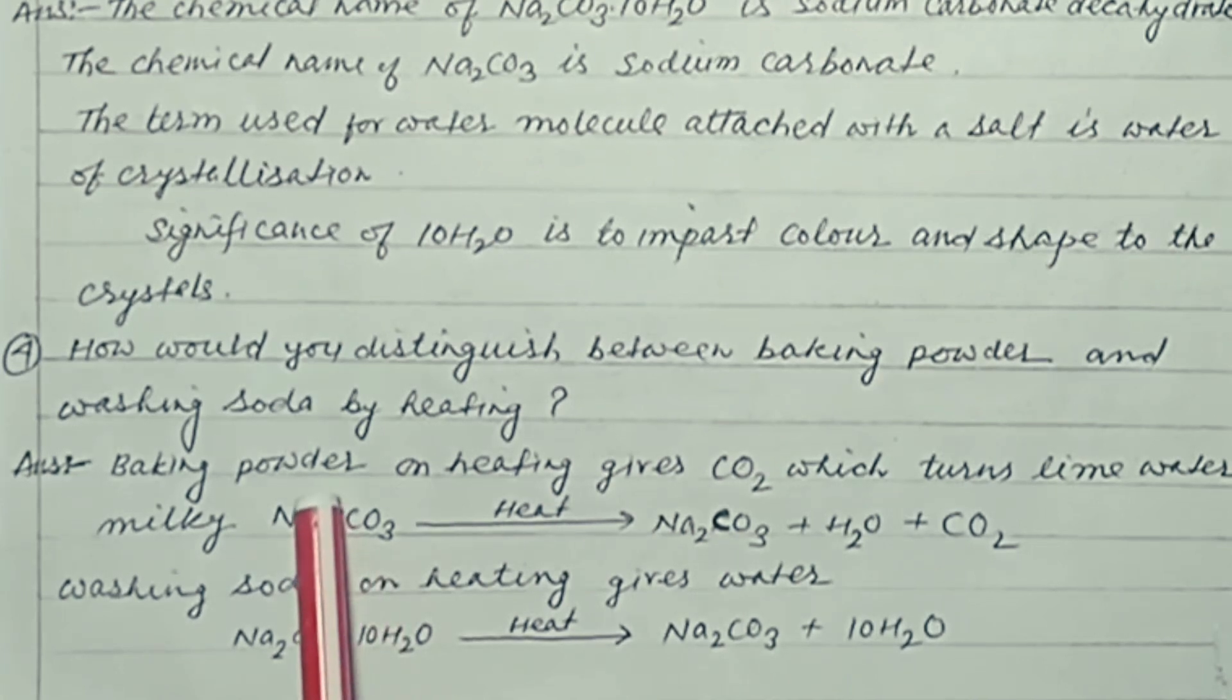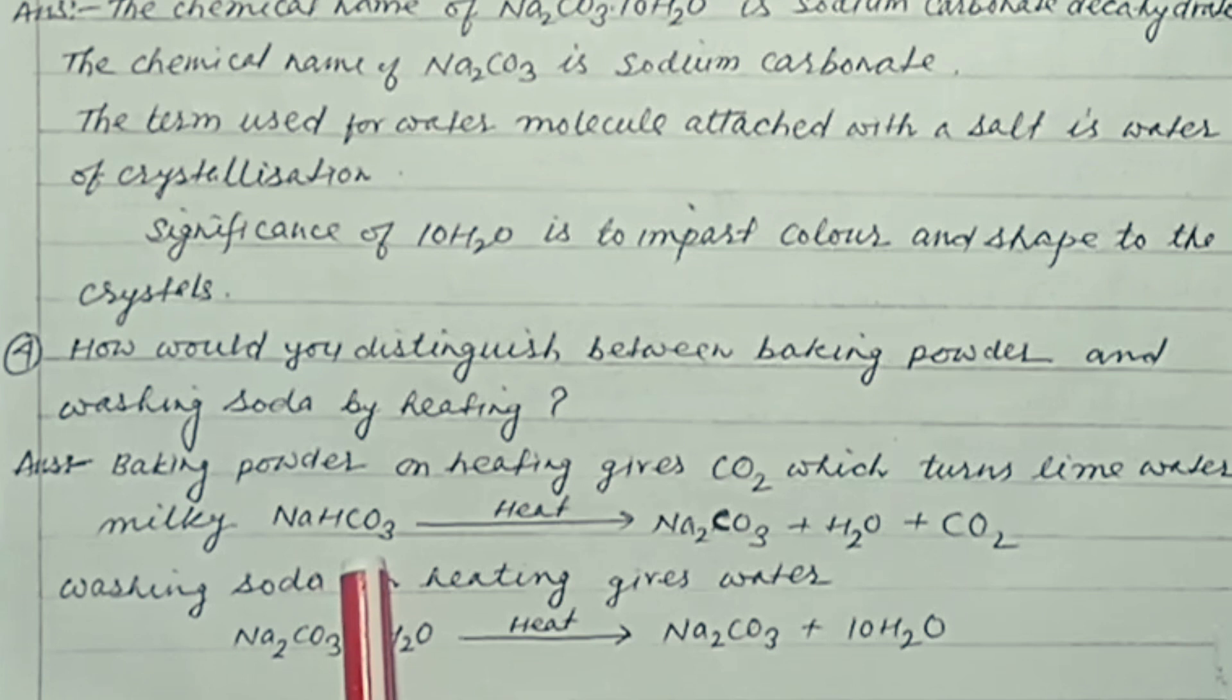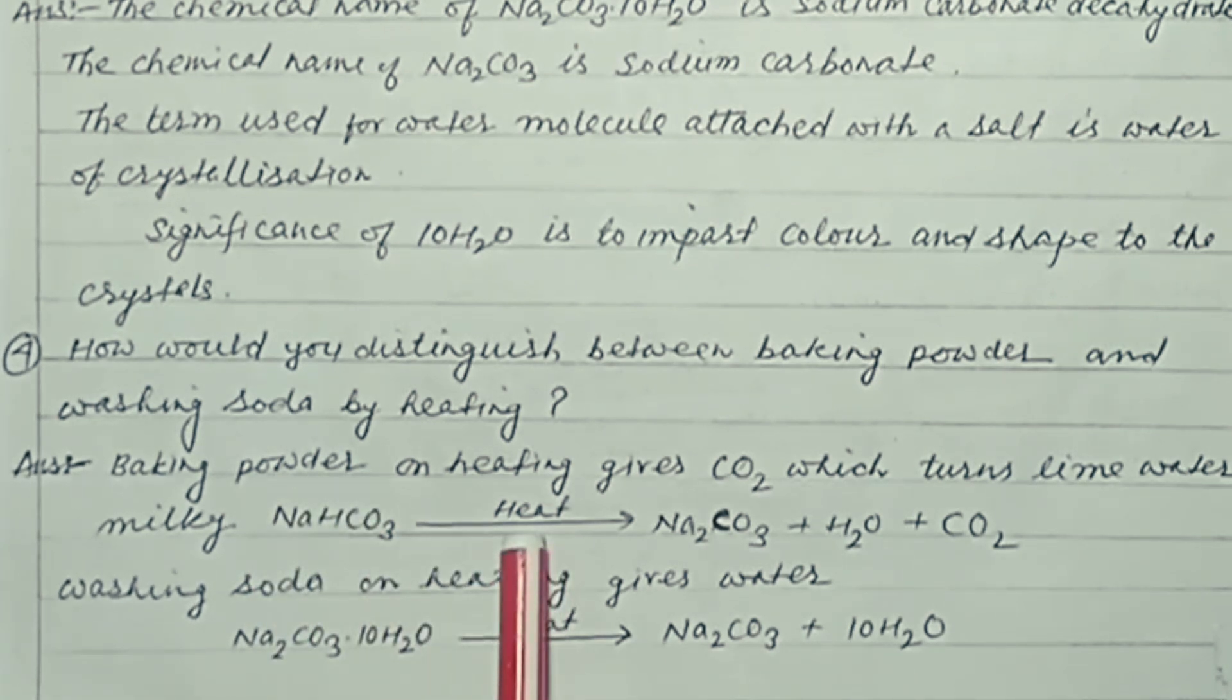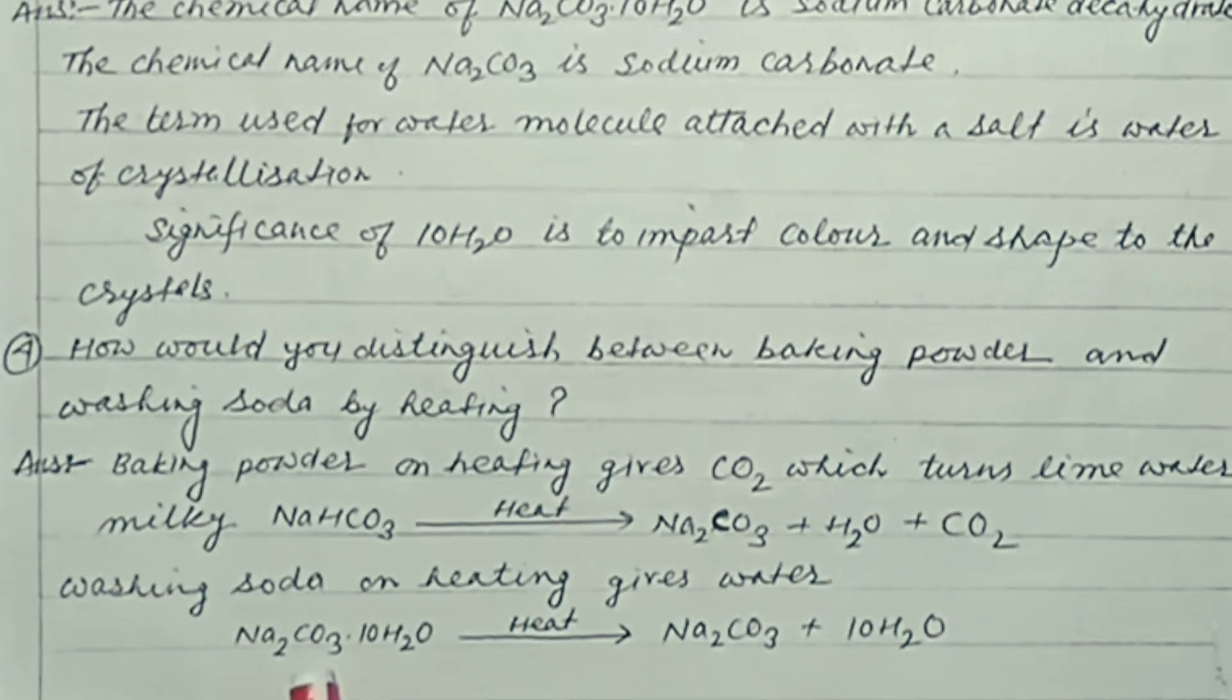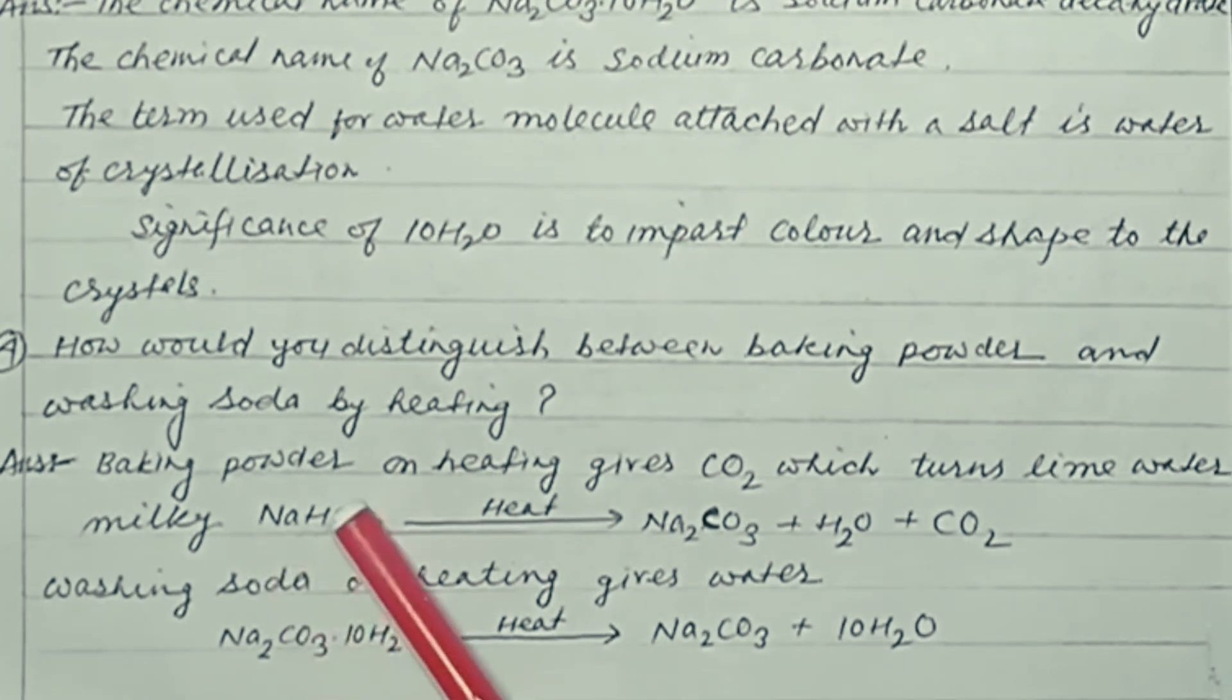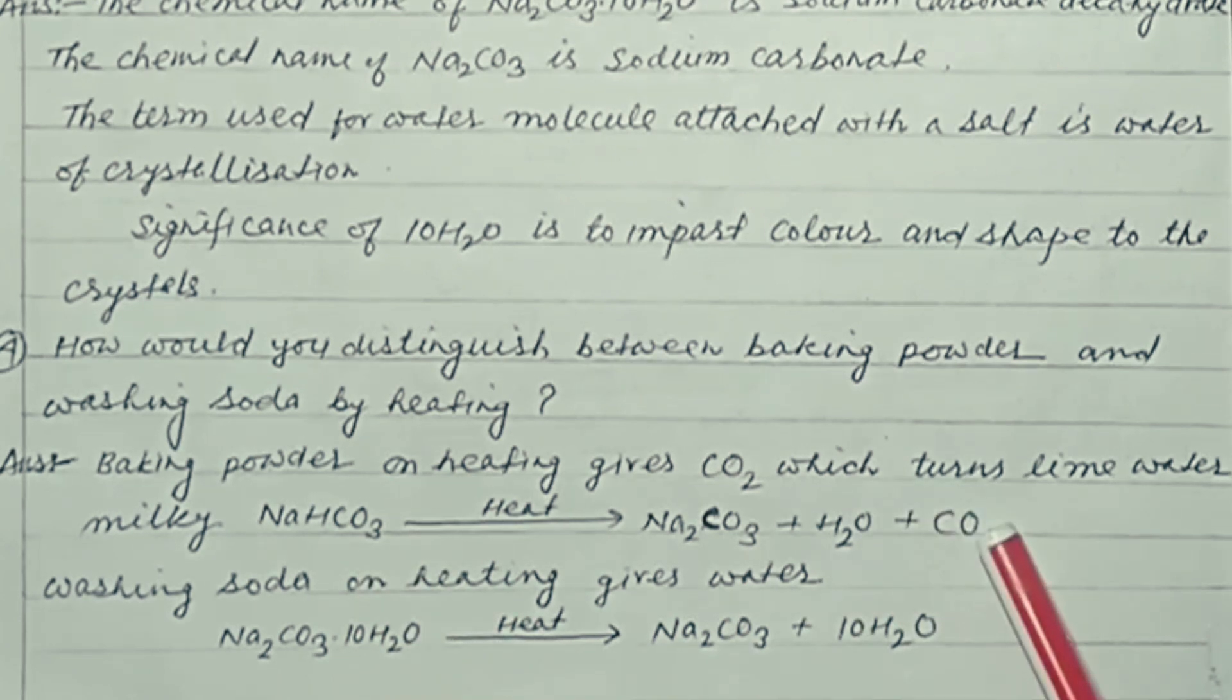Children, baking powder is NaHCO3. When it is heated, sodium carbonate, water, and carbon dioxide form. This carbon dioxide when passed through lime water turns the lime water milky. Washing soda is Na2CO3.10H2O. When we heat it, Na2CO3 plus water forms. So the difference between baking powder and washing soda is that baking powder releases carbon dioxide and washing soda releases water.